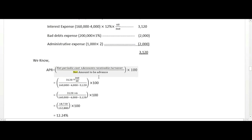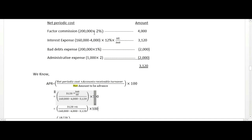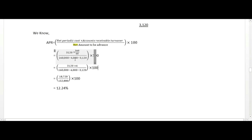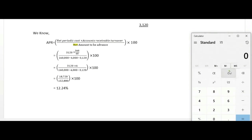Net amount to be advanced is 160,000 after deducting factor commission and other charges. The turnover calculation uses 365 days divided by 60 days collection period, which equals approximately 6 times per year.